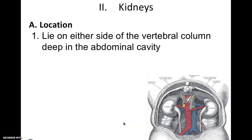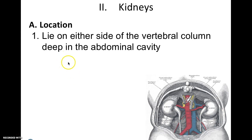Kidneys lie on either side of your vertebral column — in other words, on either side of your spine. As you see in this picture, all the organs have been removed so you can see them; otherwise they'd be hidden by your digestive organs. Kidneys sit in a depression called the renal sinus. You'll actually see this when you remove the kidneys from the rabbit — it leaves a depression called a sinus.